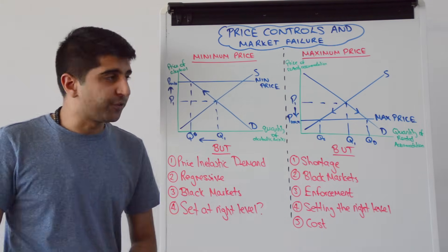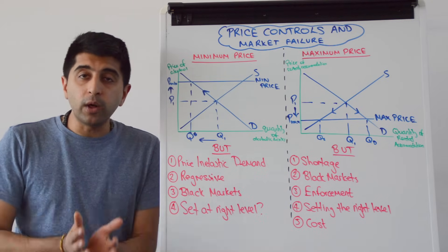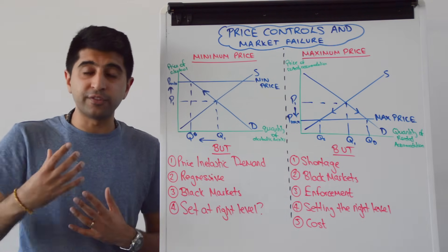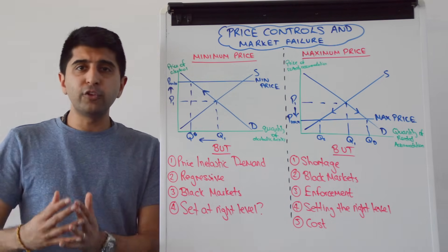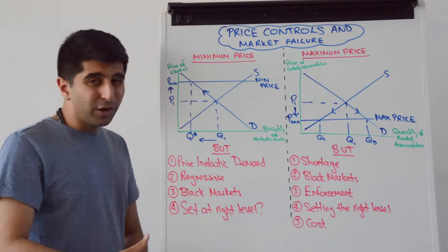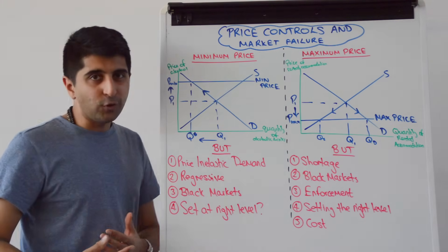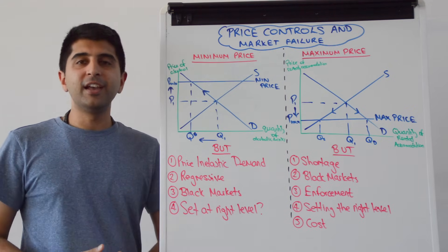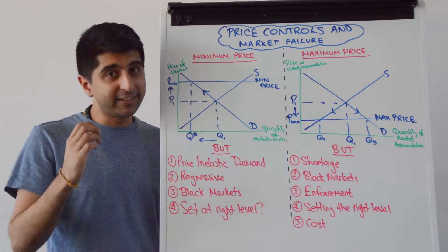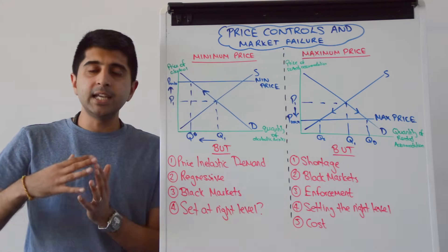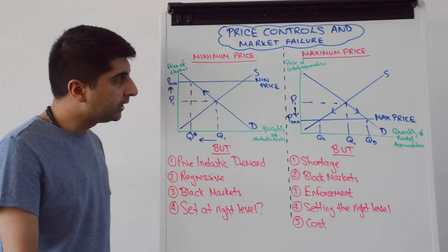Individuals will find alternative supplies if they're suffering from a higher price. If they really want to buy alcoholic drinks, they could find alternative supplies in the black market — dangerous because who knows the quality of what they're buying. They might also find much cheaper, worse-quality alcoholic drinks, potentially making the market failure worse, or they may smuggle from abroad — for example in Scotland, going to England to buy cheaper alcohol and bringing it back.